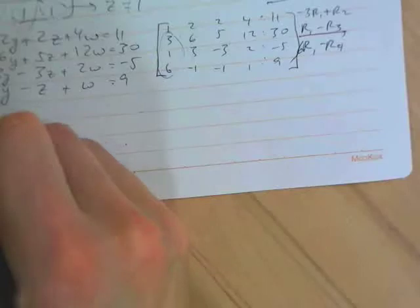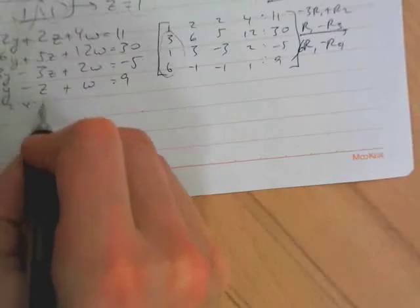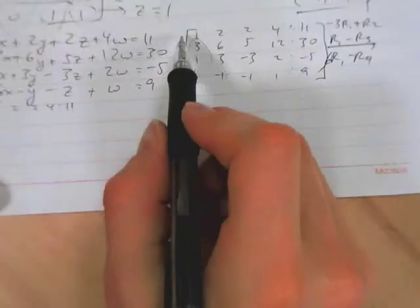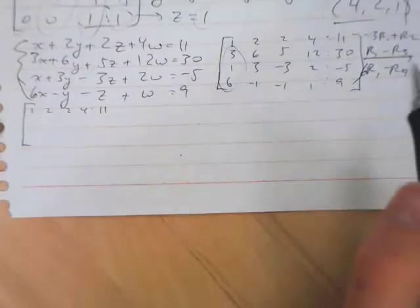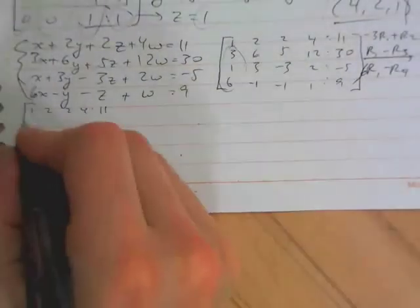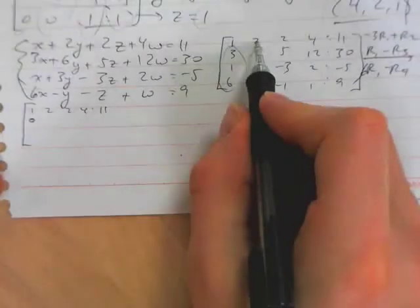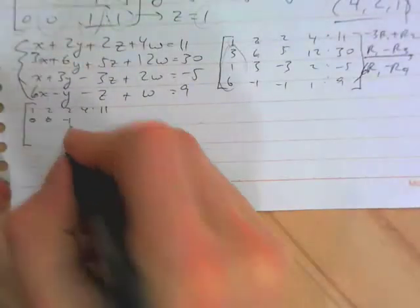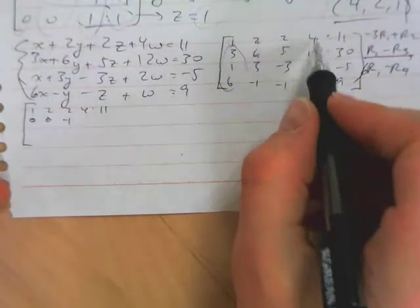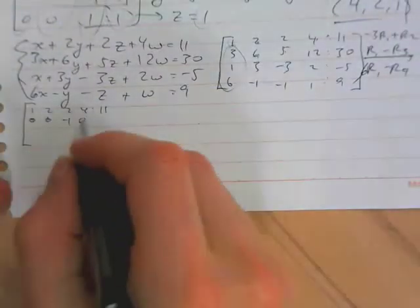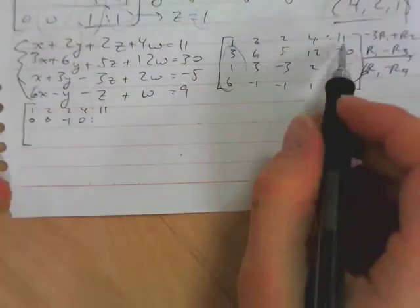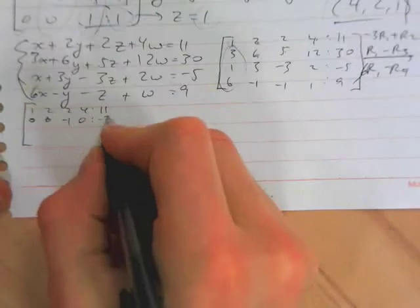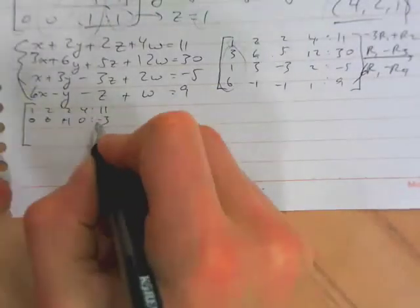What does that leave us with? Well, row 1 remains the same: 1, 2, 2, 4, 11. And we have negative 3 times row 1 plus row 2. So that's negative 3 plus 3 is 0. Negative 6 plus 6 is also 0. That's convenient. Negative 6 plus 5 is negative 1. Negative 12 plus 12 is also 0. That's extremely convenient. And we get negative 33 plus 33 is negative 3. And I would go ahead and we could divide that row by negative 1 to kill off the negatives.